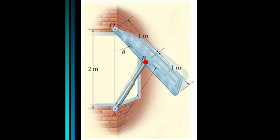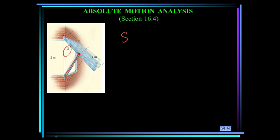Here's the window again, being opened by a hydraulic cylinder going from A to B. The absolute motion analysis method relates the position of point P on a rigid body undergoing rectilinear motion to the angular position theta of a line contained in the body. Once a relationship in the form S equals some function of theta is established, we can get the velocity and acceleration of B by taking the first and second time derivatives. You usually need to use the chain rule when taking these derivatives.